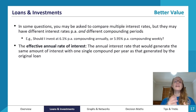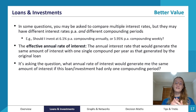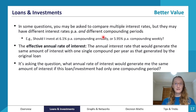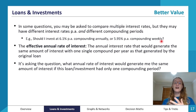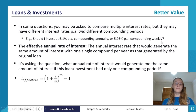The effective annual rate of interest is the annual interest rate that would generate the same amount of interest with one single compound per year as that generated by the original loan. So for example, to compare 6.1% compounding annually with 5.95% compounding weekly on equal footing, we convert the weekly option: what annual rate with one compound per year would generate the same interest? By finding that value, we can compare both options directly. M in the formula is the number of compounds per year.